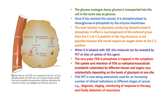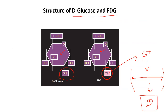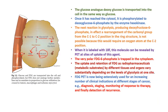The next step in glycolysis requires FDG-6-phosphate to be converted to a ketone sugar derivative — the aldose sugar must be converted to a ketose sugar. This conversion requires the presence of the second carbon hydroxyl group, which FDG lacks. Therefore, further processing of FDG-6-phosphate cannot occur. FDG cannot be used for energy production and becomes metabolically trapped inside the cell. Additionally, the added phosphate group makes it highly polar, preventing it from leaving the cell.